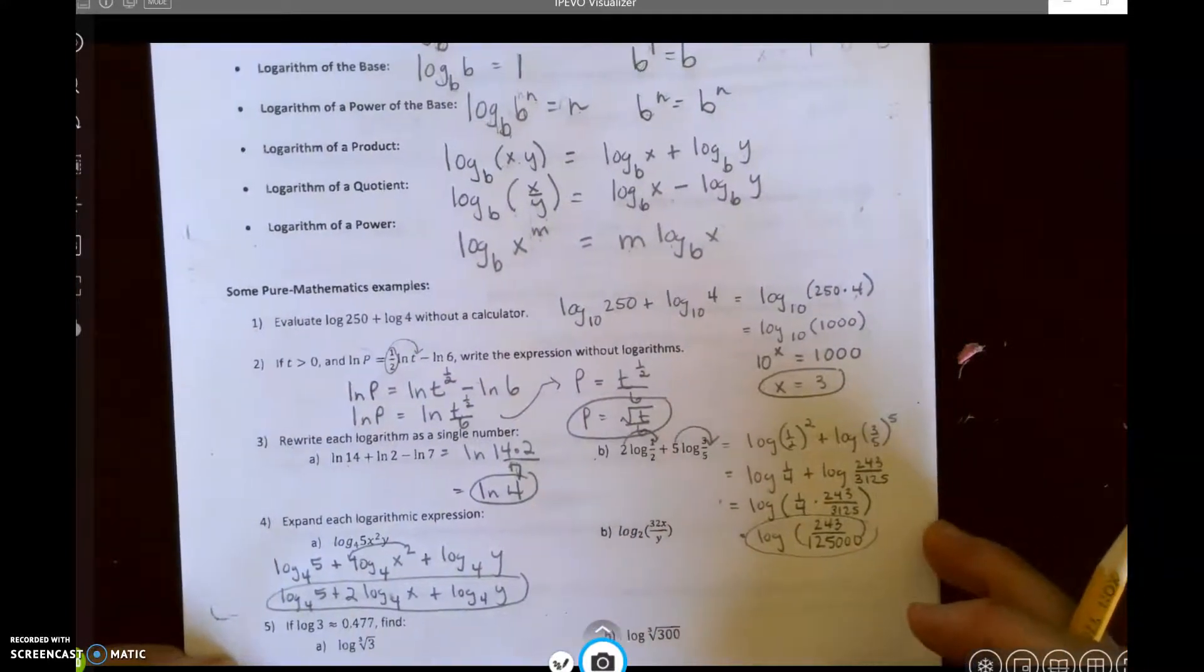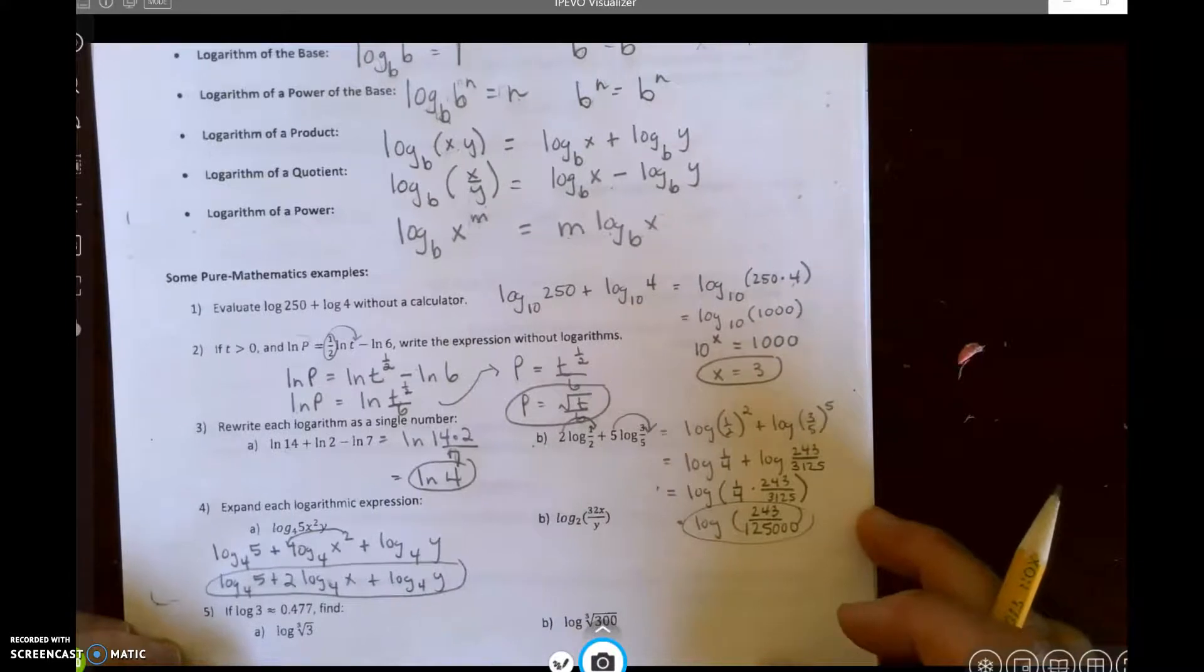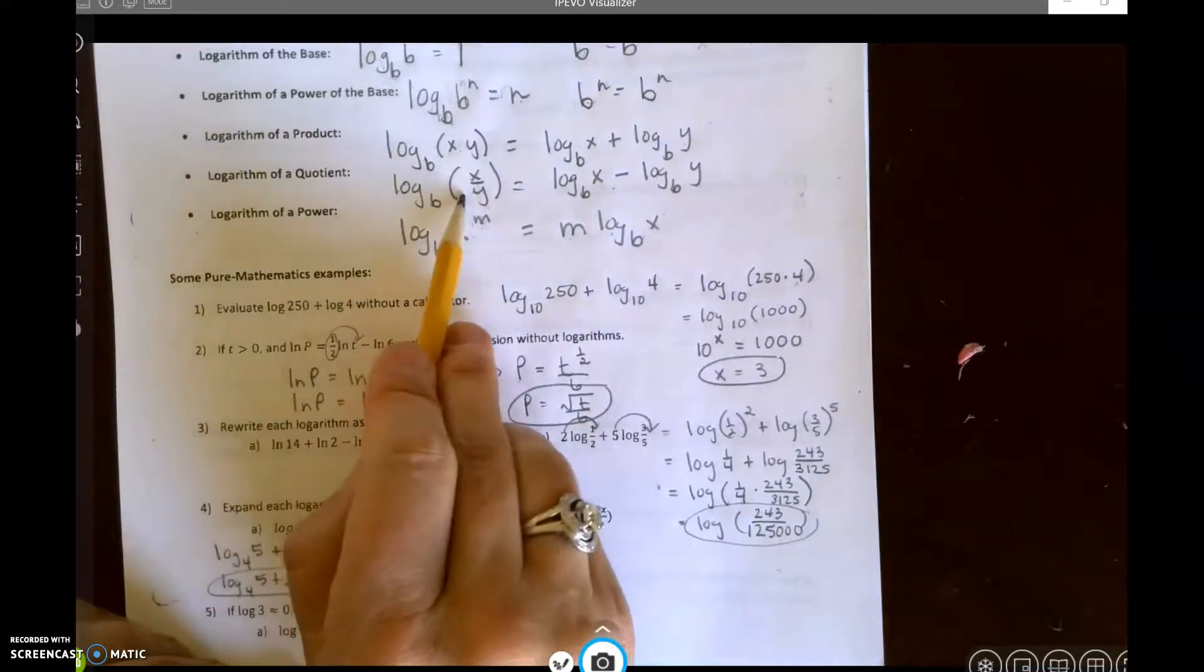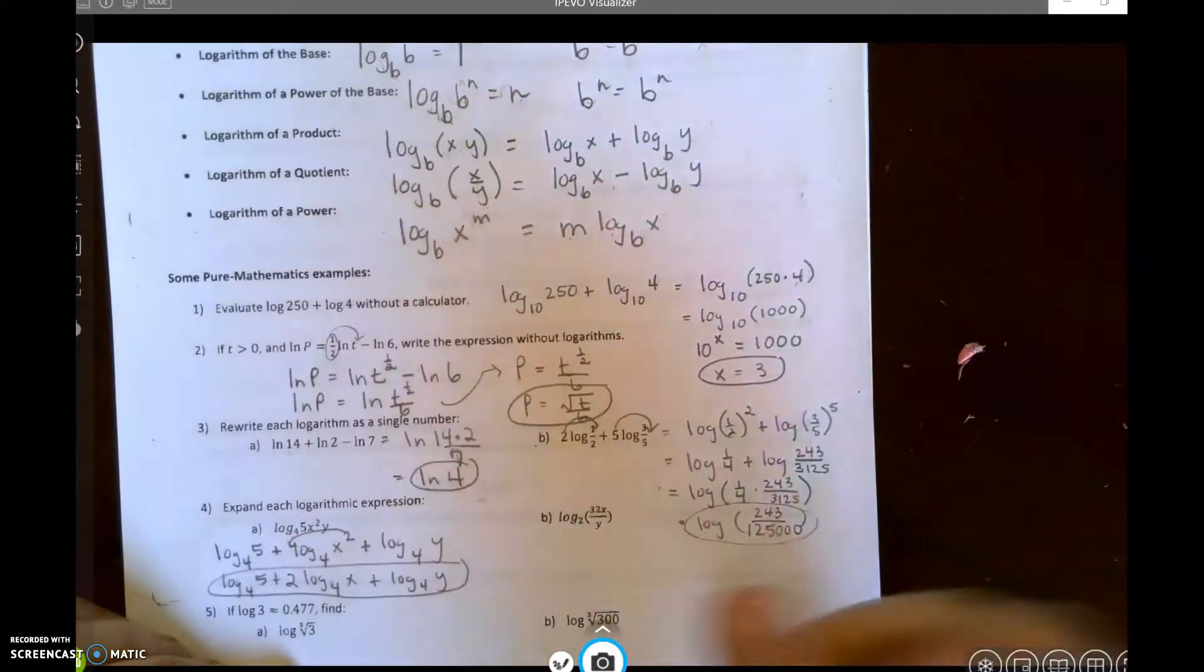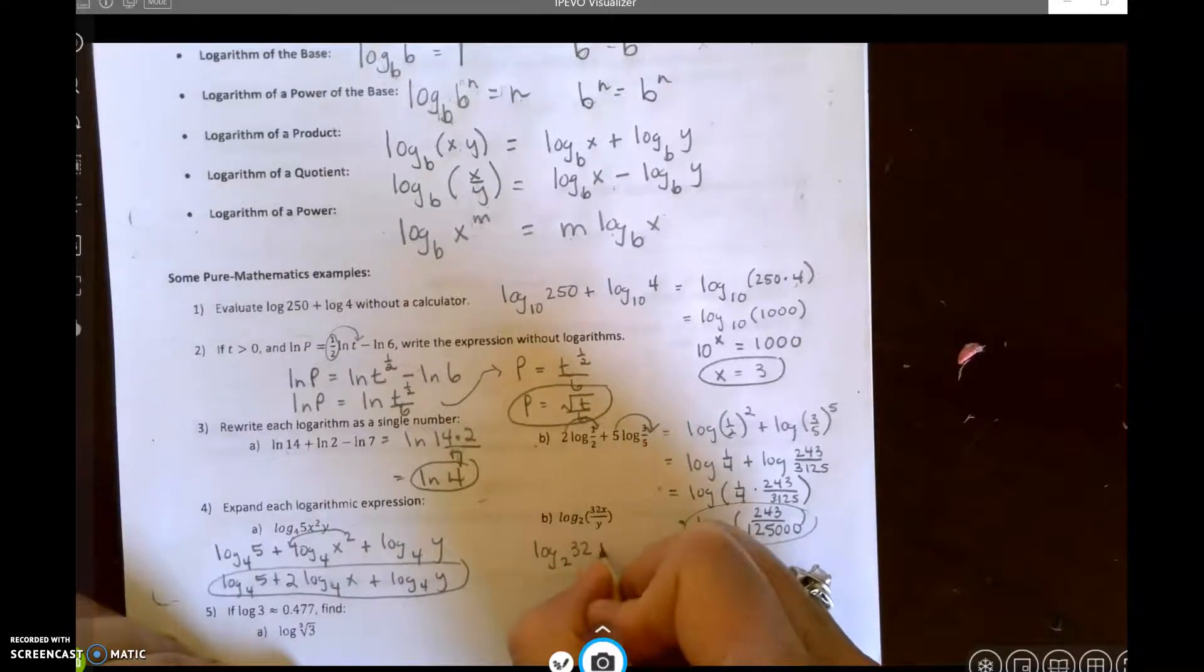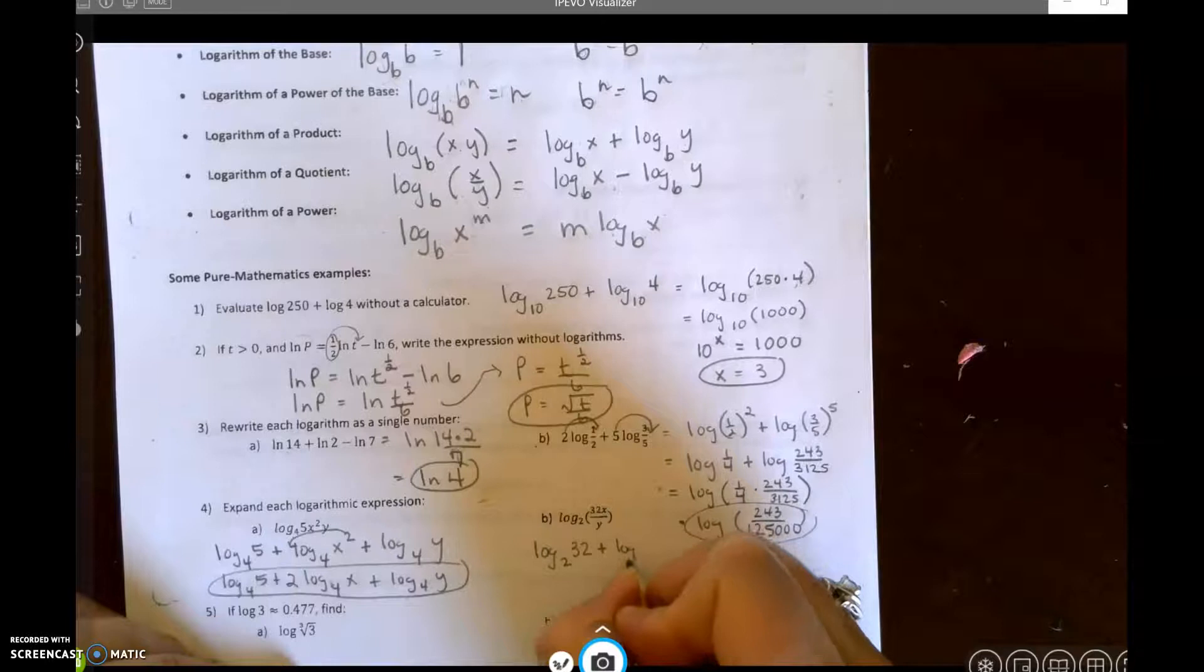Let's go on to letter b. Letter b, I've got division. Now remember that division means subtraction. Log base 2 of 32 plus log base 2 of x.